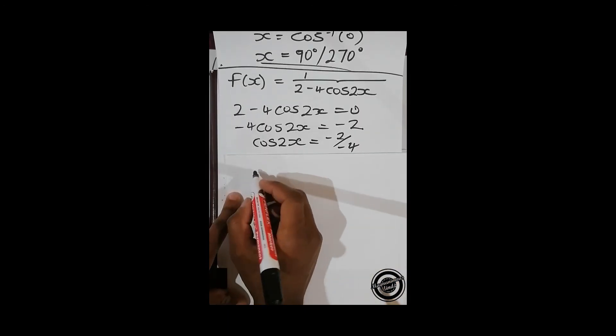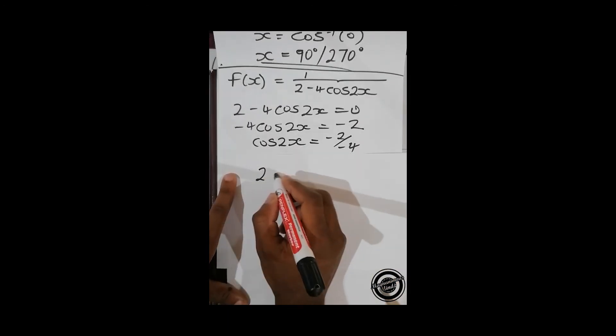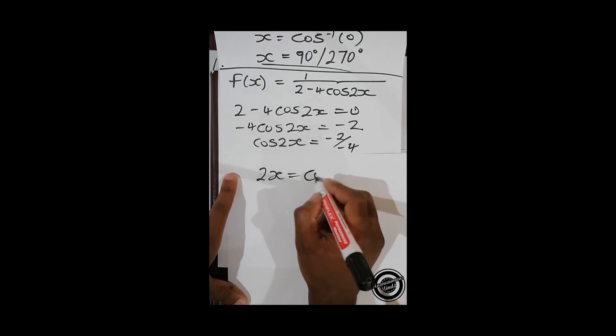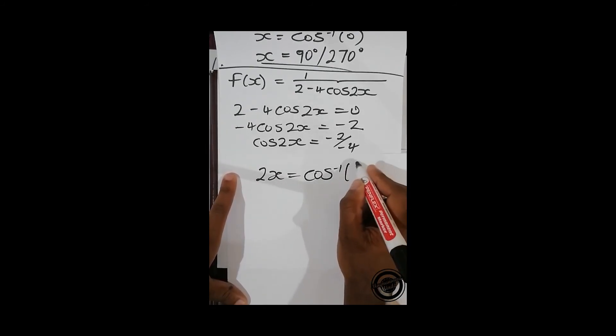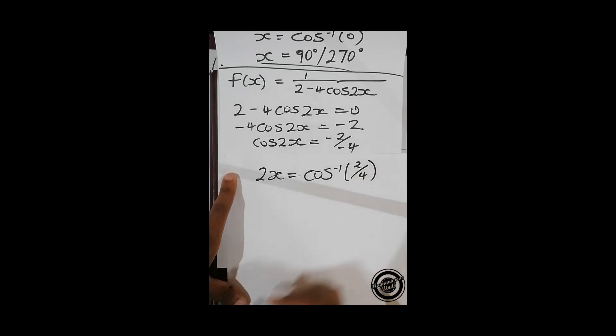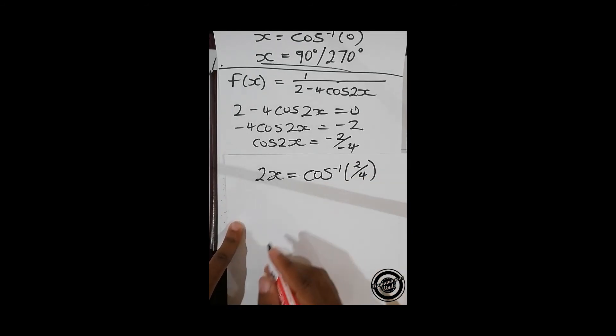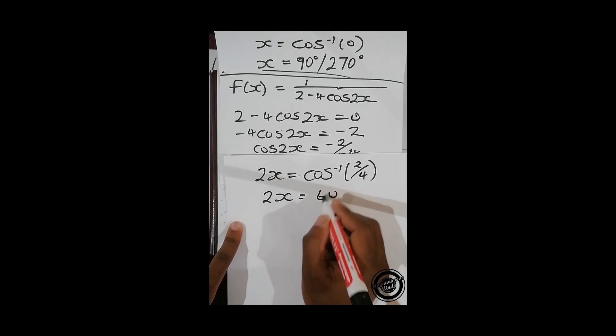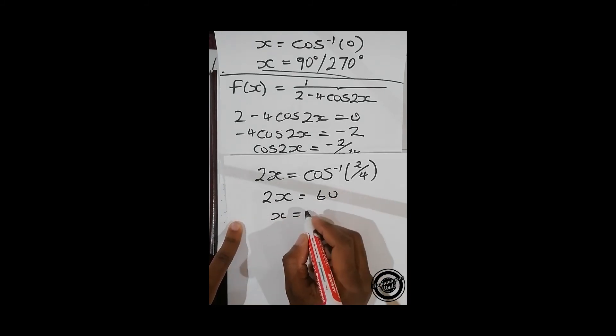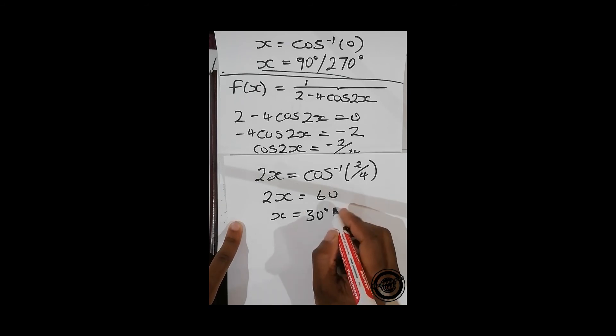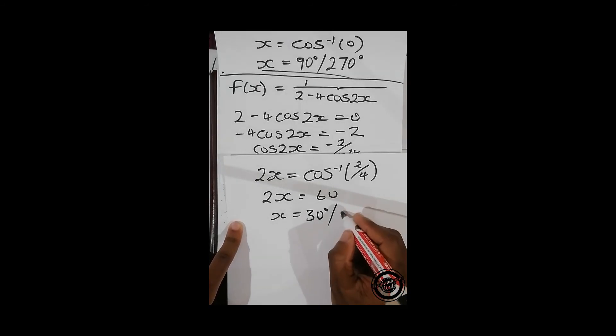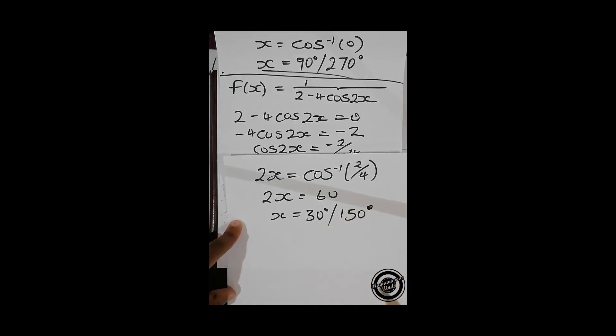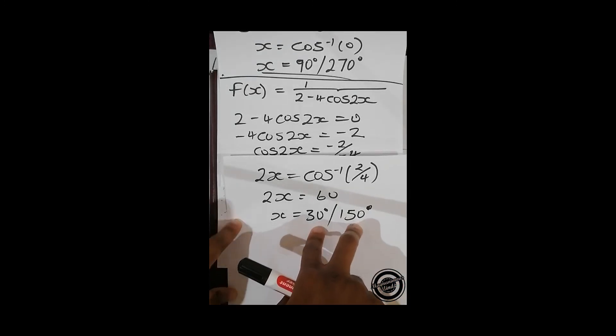This becomes 2x equals to cos inverse of 2 over 4, and then 2x equals to 60 and x equals to 30 or 150 degrees.